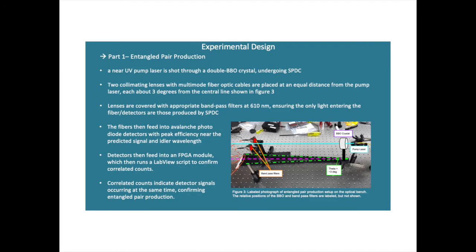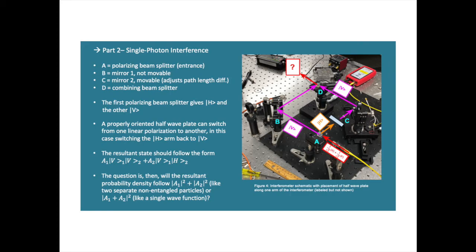Those generated photons are gathered by two collimated lenses that are connected to fiber optic cables, and the fiber optic cables lead to our detectors. What we're looking for here is coincidence counts from the detectors, which is when they both go off at the same time indicating the presence of a photon. Since the detectors are equidistant from the pump laser, coincidence counts will also mean entangled pair production, and then we can further optimize our physical alignment from there to get maximum amount of correlated counts possible for our setup.